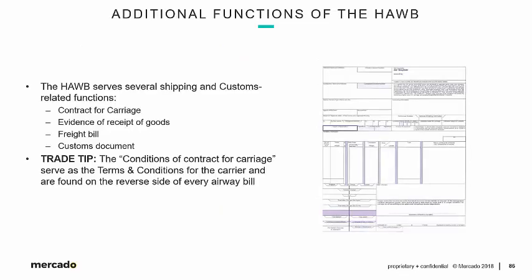Let's wrap up this section with the additional functions of the House Airway Bill. Like any bill of lading, the House Bill serves several shipping and customs-related functions. It's a contract for carriage — the terms under which a carrier will move the freight. It's evidence of receipt of goods, especially when a forwarder tenders cargo to an airline. It's also a freight bill, because the charges are broken out by prepaid and collect. And the airway bill serves as a vital component of customs clearance documentation — to do a customs clearance in the U.S., the minimum requirement is the bill of lading (in this case, a House Airway Bill), commercial invoice, and packing list.